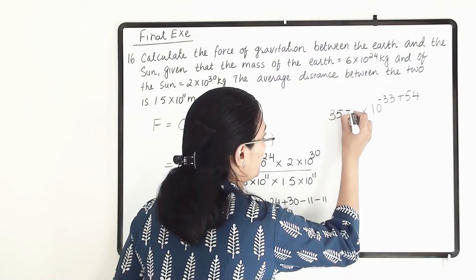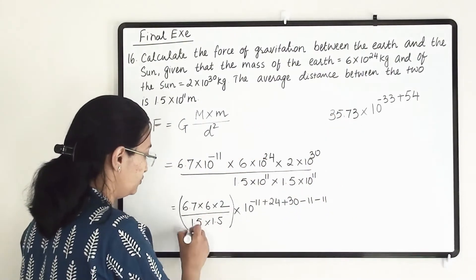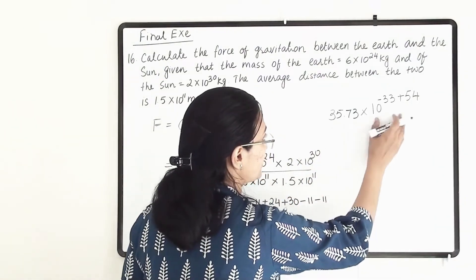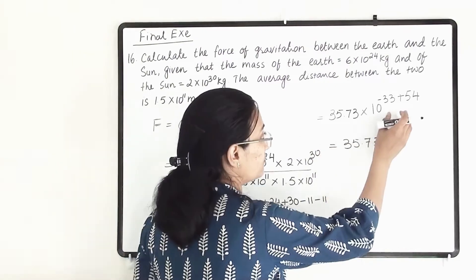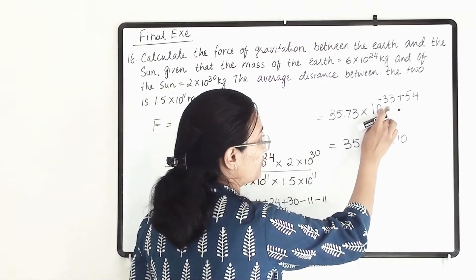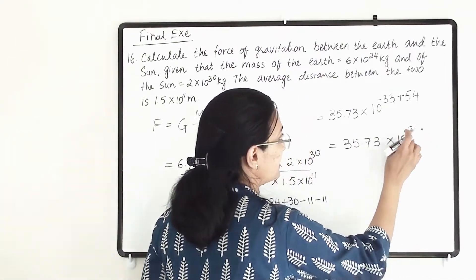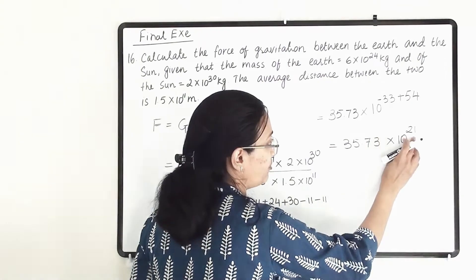When we solve this term, 35.73 is the answer. So 35.73×10 raised to 21. The sign we will get is positive because the bigger number is carrying a positive sign.